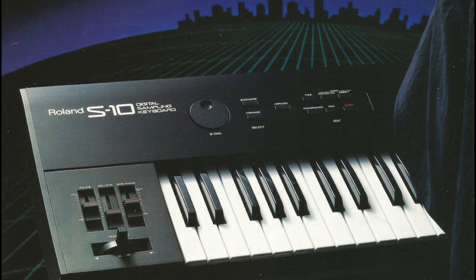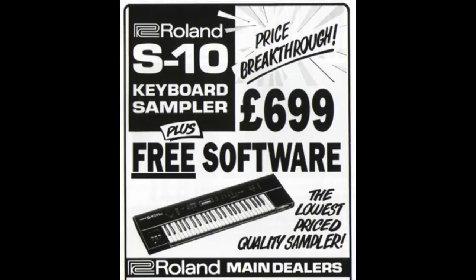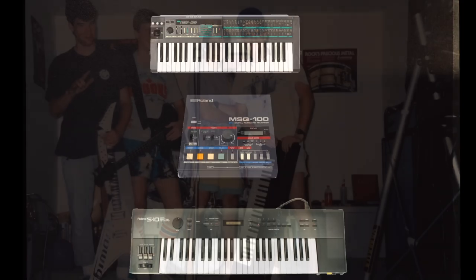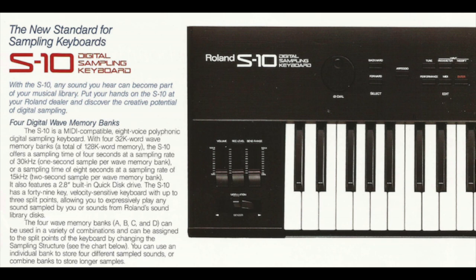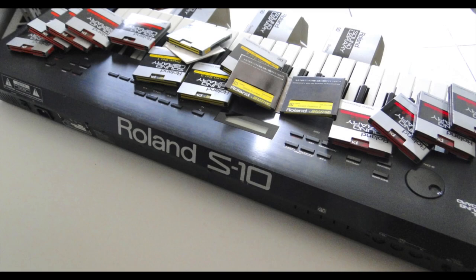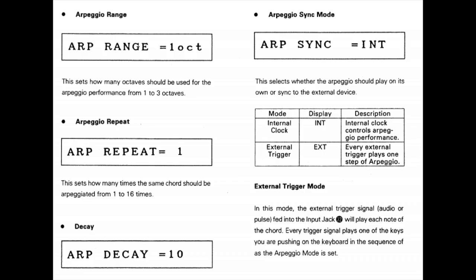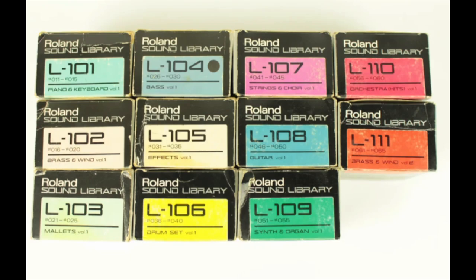Along with the S50, Roland also released its little brother, the Roland S10. I actually bought an S10 from Long & McQuade in Victoria, BC in 1987 for $899 new. This was a dream for me, as I was able to add sampling to my small but fun home studio setup, which included a Korg Poly-800 and an MSQ-100 sequencer. The S10 had four banks of sampling and could select between 30kHz and 50kHz sample rate in each bank for a maximum of 8 seconds total sample time. It also had a simple arpeggiator — a feature not found on the S50. All data could be saved on a single 2.8-inch Quick Disk, similar to the Akai S612.